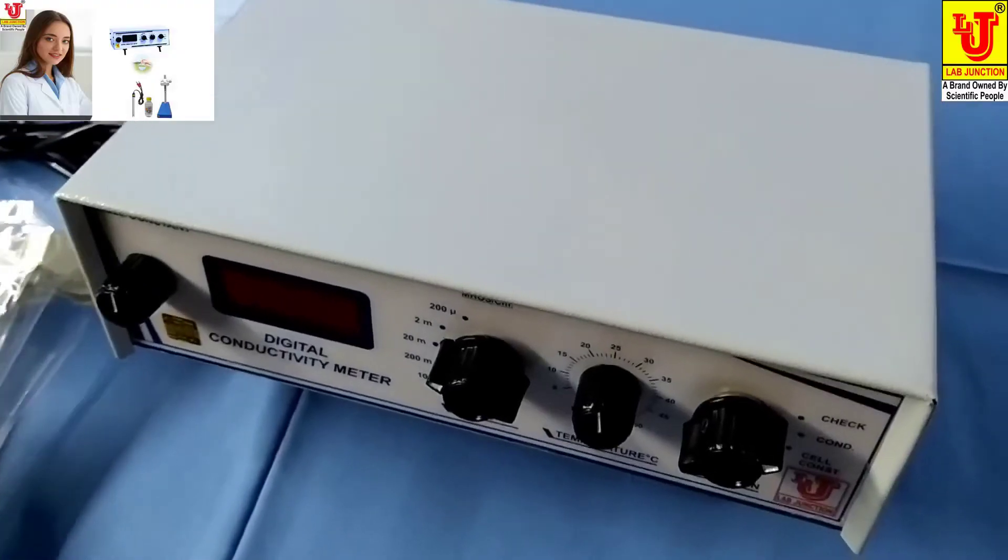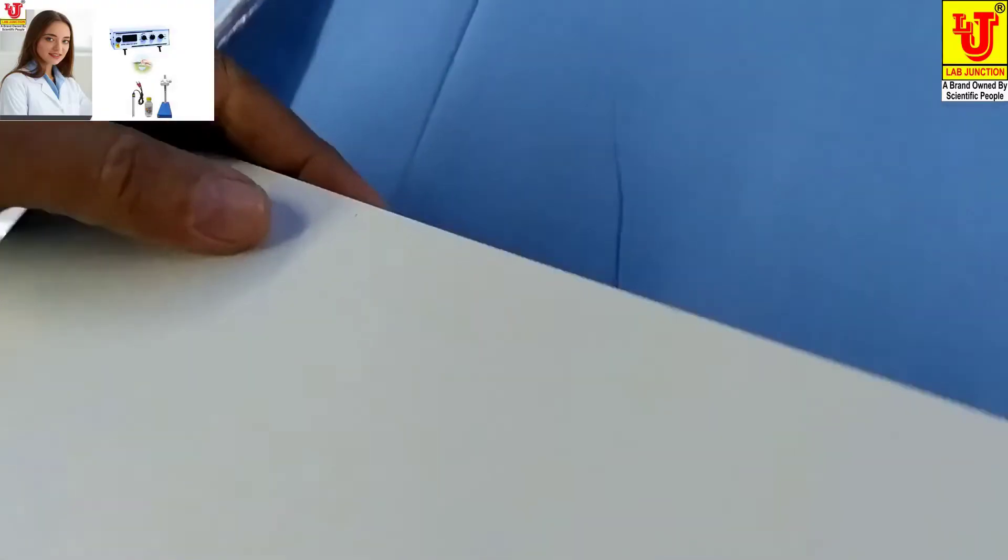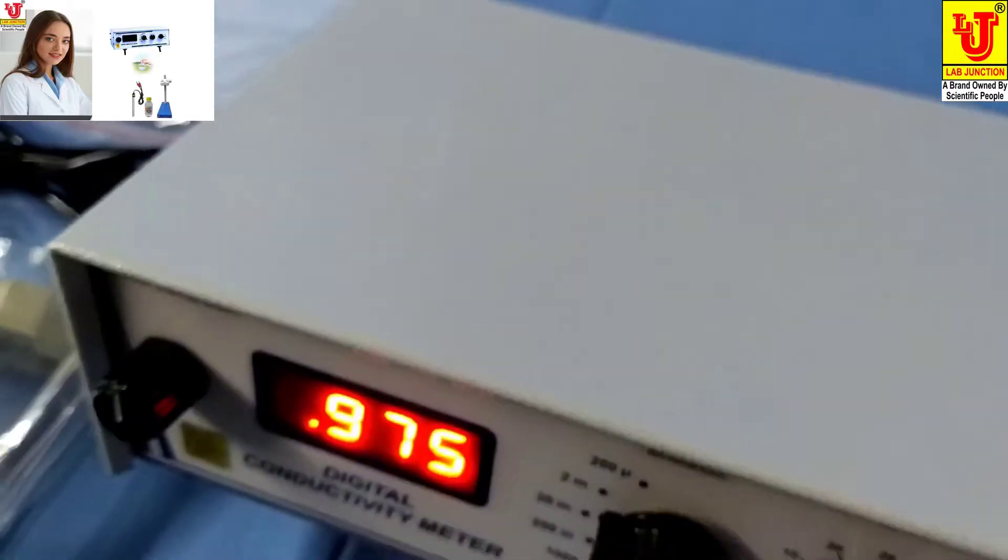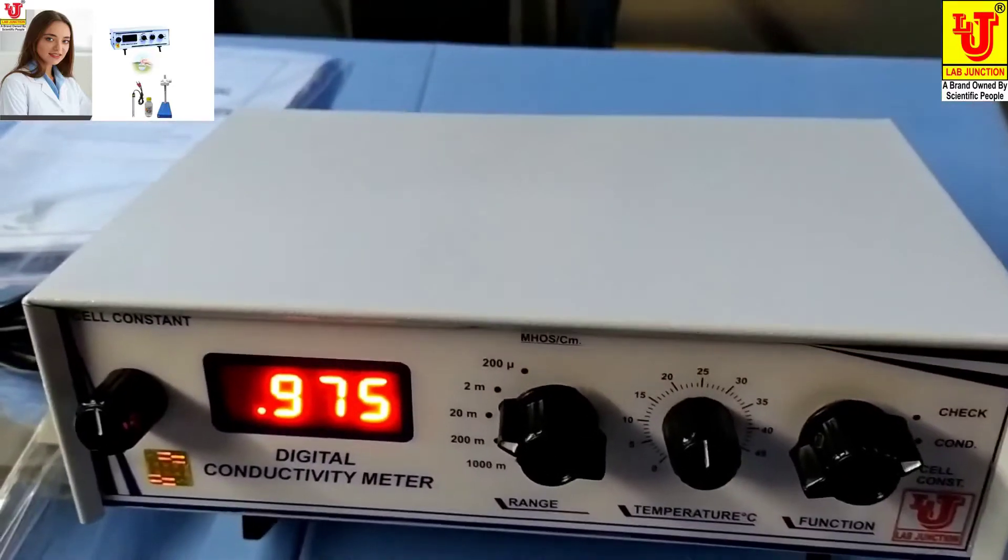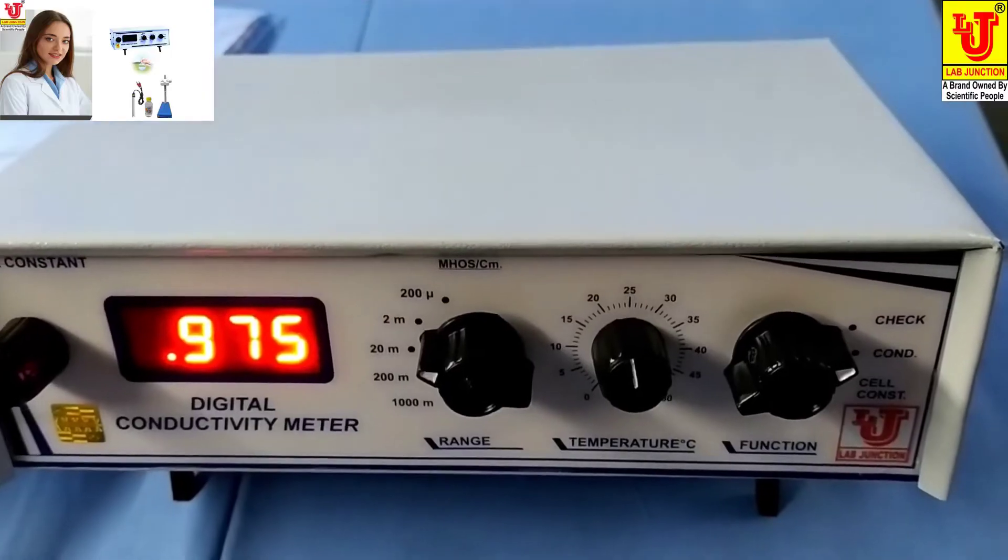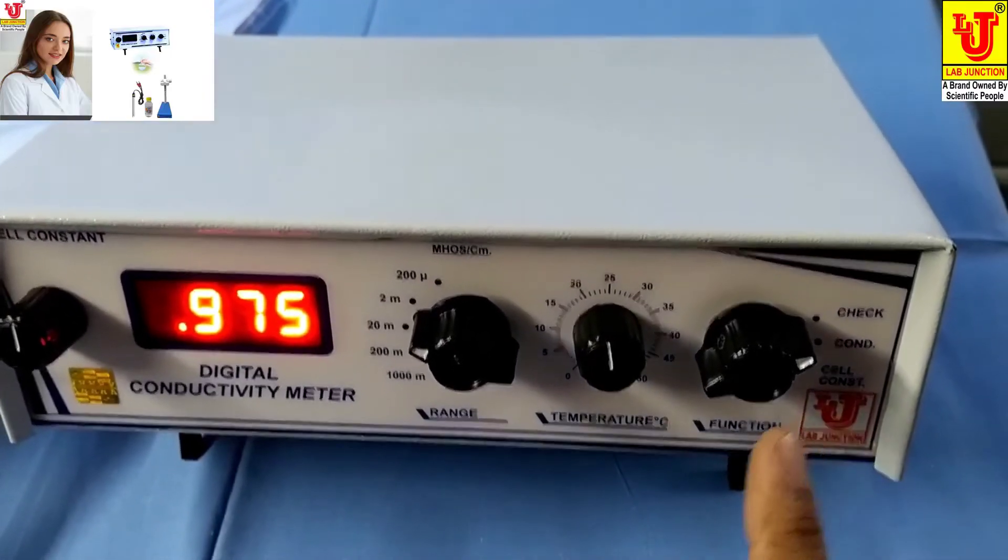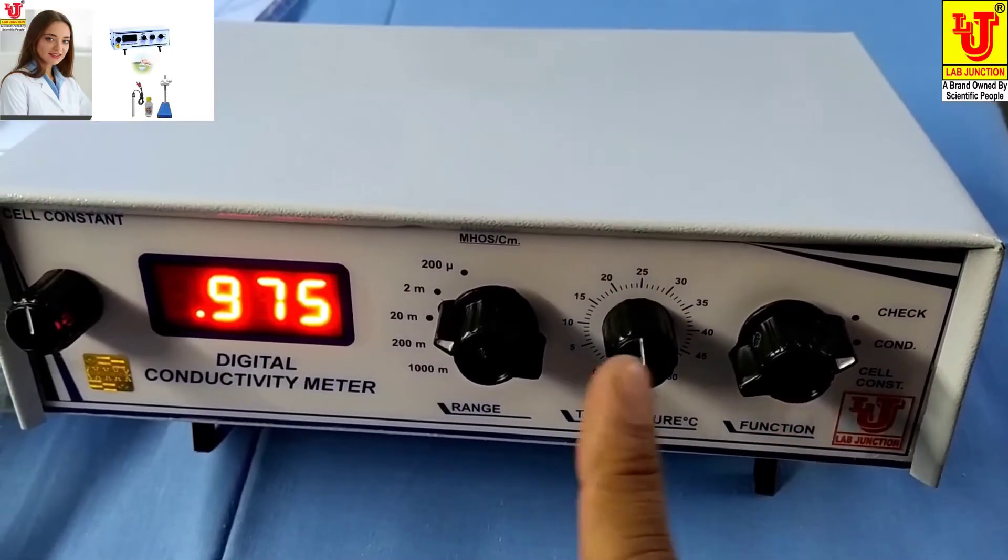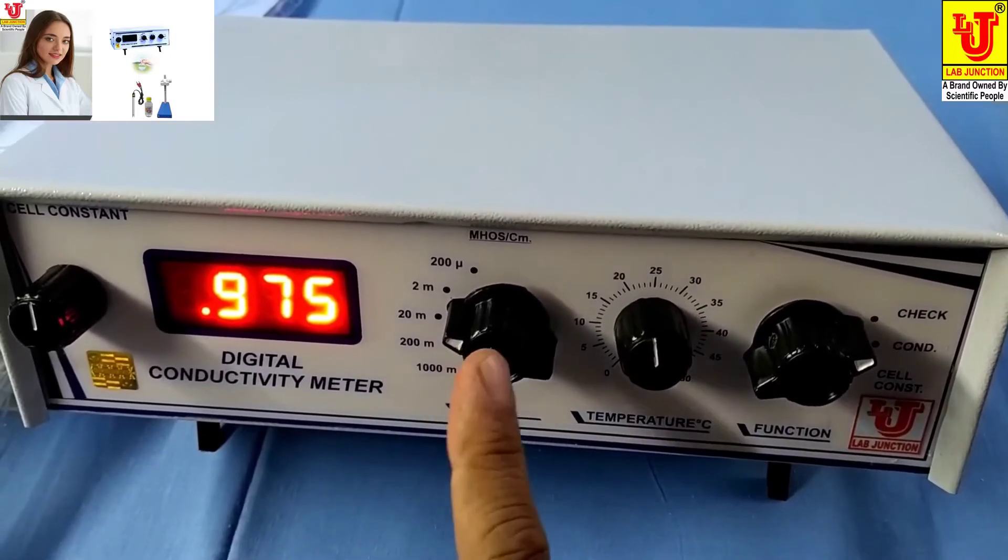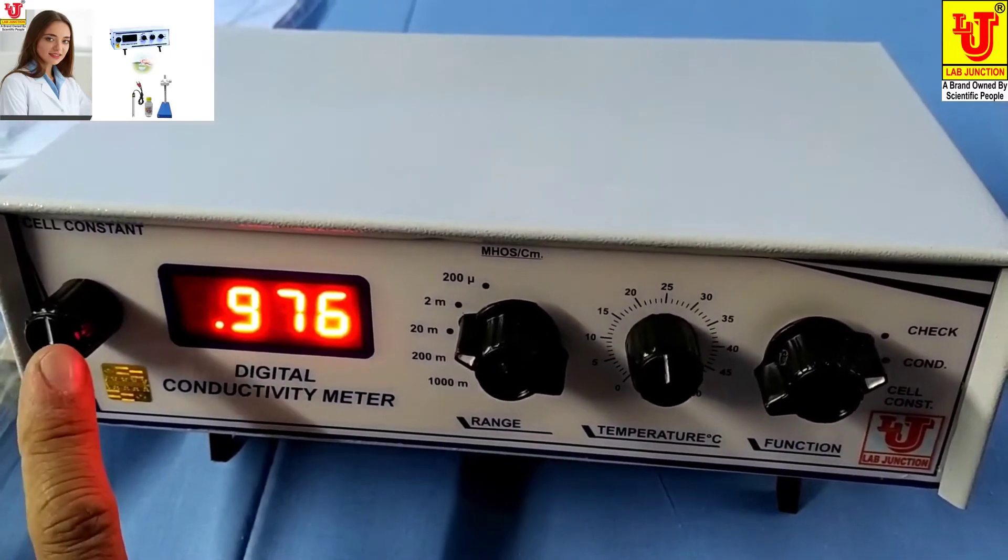Now I am switching on the machine. There are four controls: function control, temperature control, range switch, and cell constant knob.